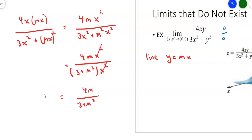Those x squareds cancel top and bottom, and I'm left with 4m over (3 plus m squared). Now try different values of m. Try m equals 1. If m equals 1, I get 4 over 4, which is 1. So that limit is 1 if the slope of the line is 1. What if the slope is negative 1? Then I get negative 4 on the top, and 3 plus negative 1 squared is 4. That gives me negative 1. Two of them are not equal. Limit doesn't exist.